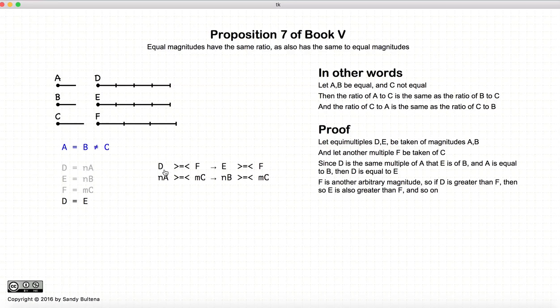Well, d is equal to nA, f is equal to mC, e is equal to nB, and f is equal to mC. Well, this looks like an awful lot like the definition of the equality of a ratio. And it actually is the definition of the equality of a ratio. So here we have shown, since we've proven that this is true, then by definition, the ratio of a to c is equal to the ratio of b to c.